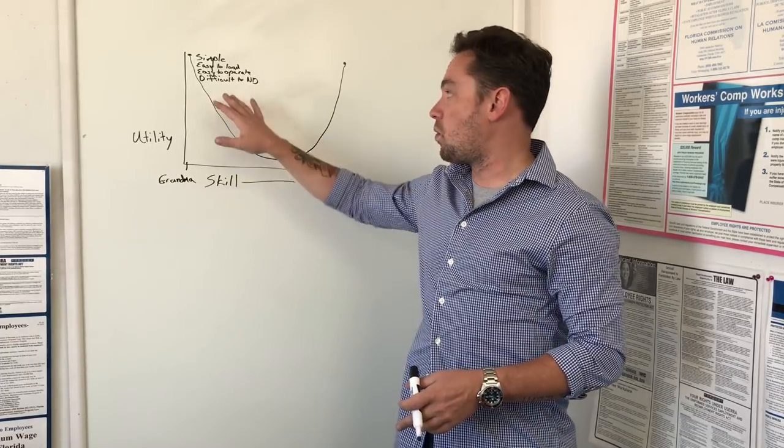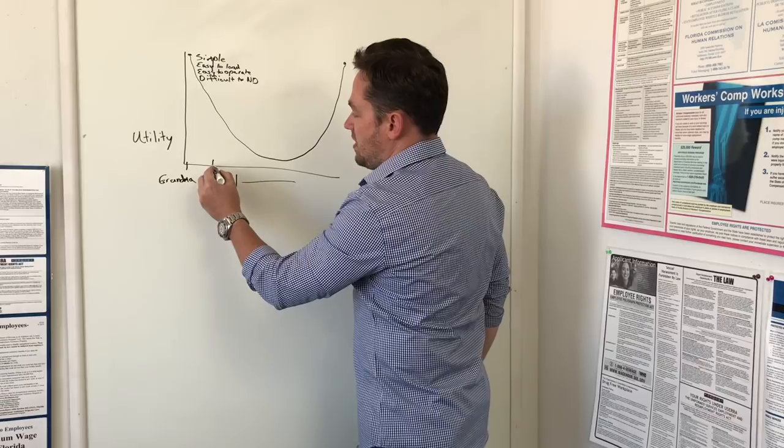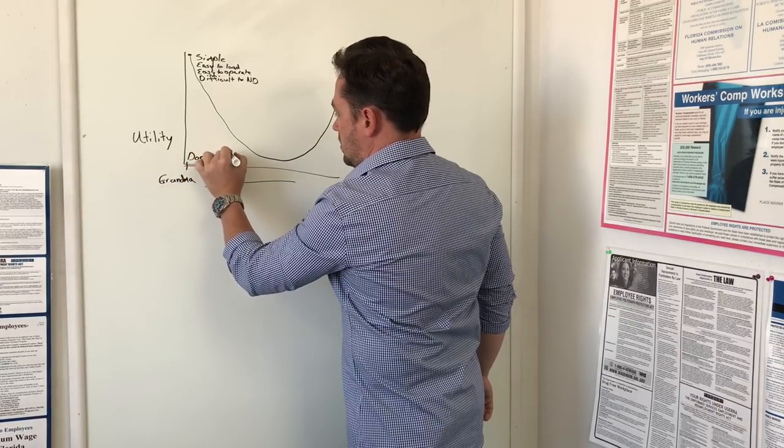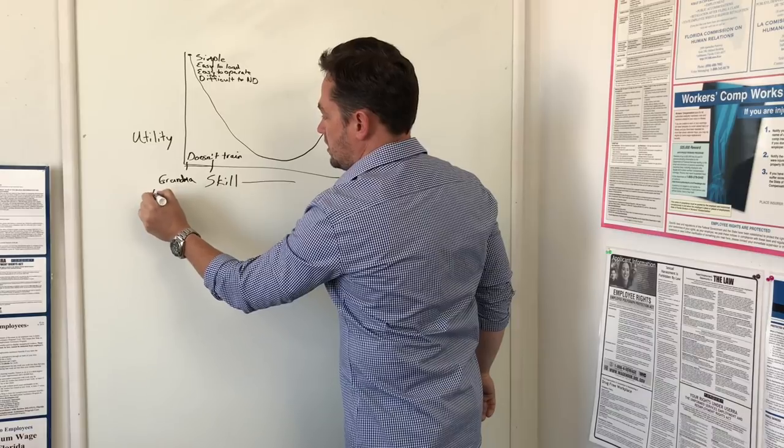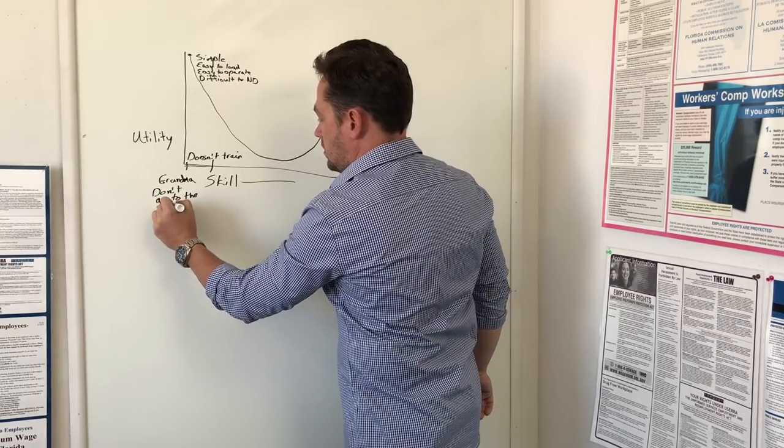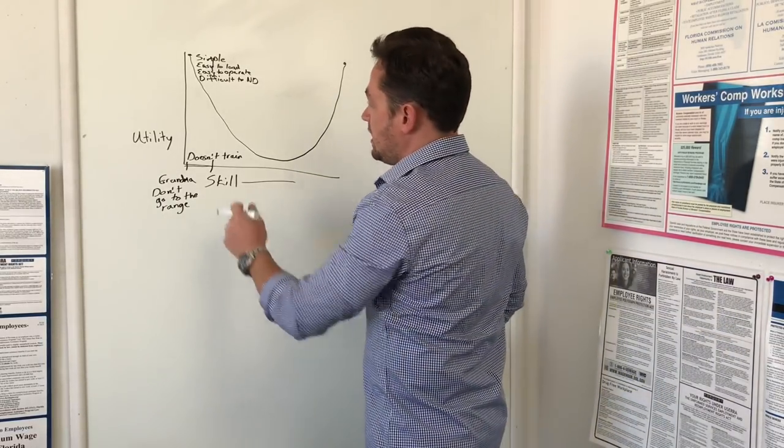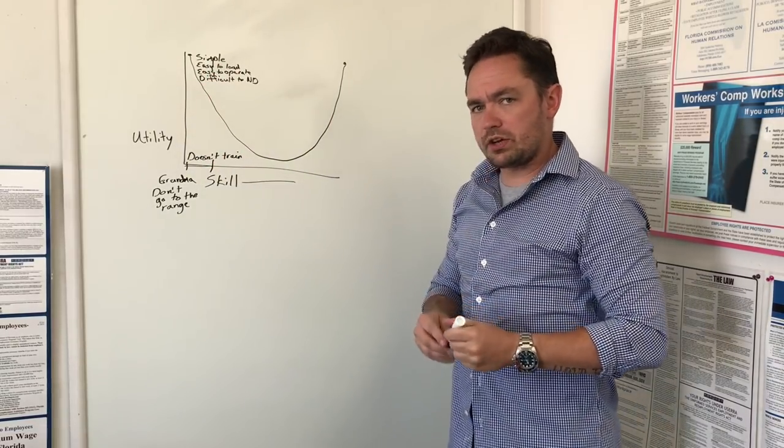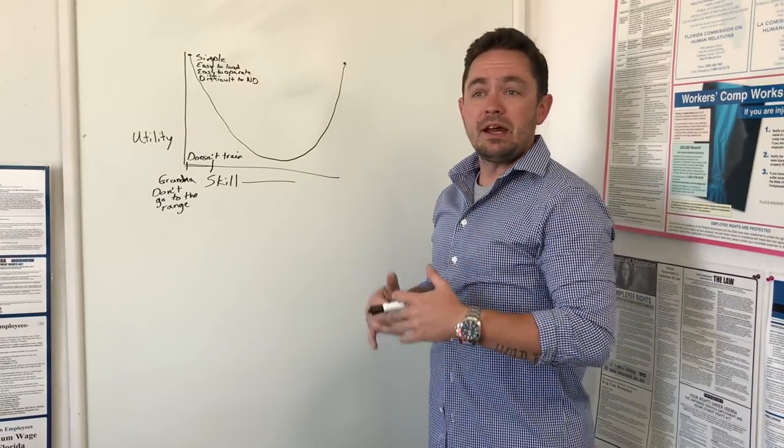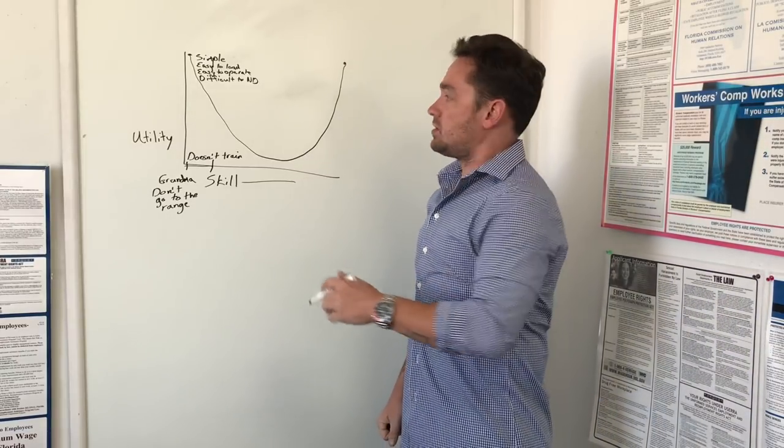Because this is a real concern for new shooters who aren't going to seek out training. This person down at this skill level does not seek training. They don't go to the range. And they're largely uninterested in firearms ownership as a hobby. So for these kind of people, the revolver makes sense because what they're looking for is a gun. A gun so that when someone kicks down their door at 2am, they can scream, I called the police, I have a gun, and not be lying.